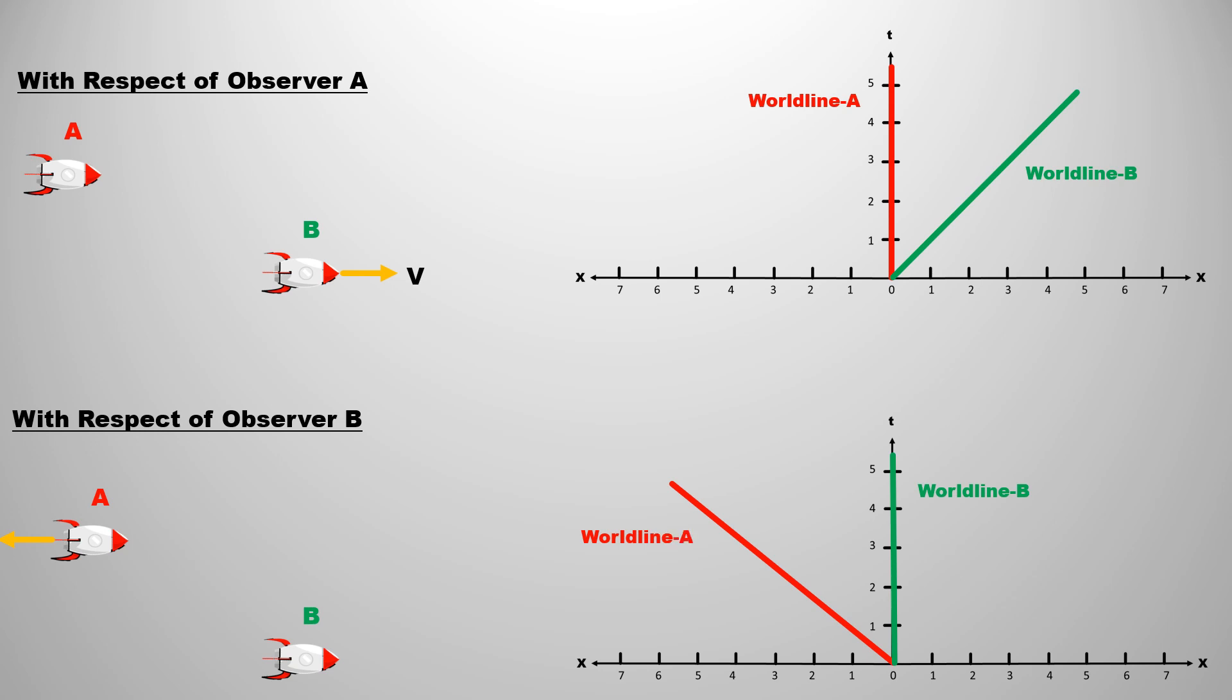This means that the world line of the observer observing events is always on the time axis. It is better to draw a different space-time diagram for each observer, or draw it for one observer and transform it for the rest.